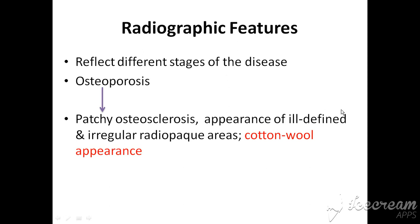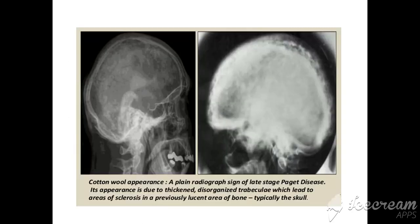When there is Paget osteoporosis, it represents as ill-defined irregular radiopaque areas that give Paget disease a definite characteristic radiographic appearance, which is mostly called the cotton wool appearance, as you will see.